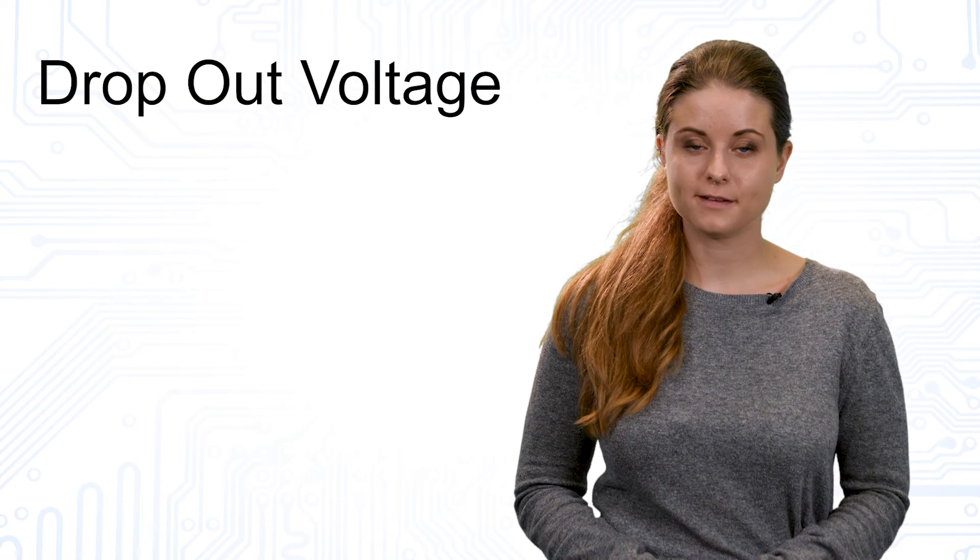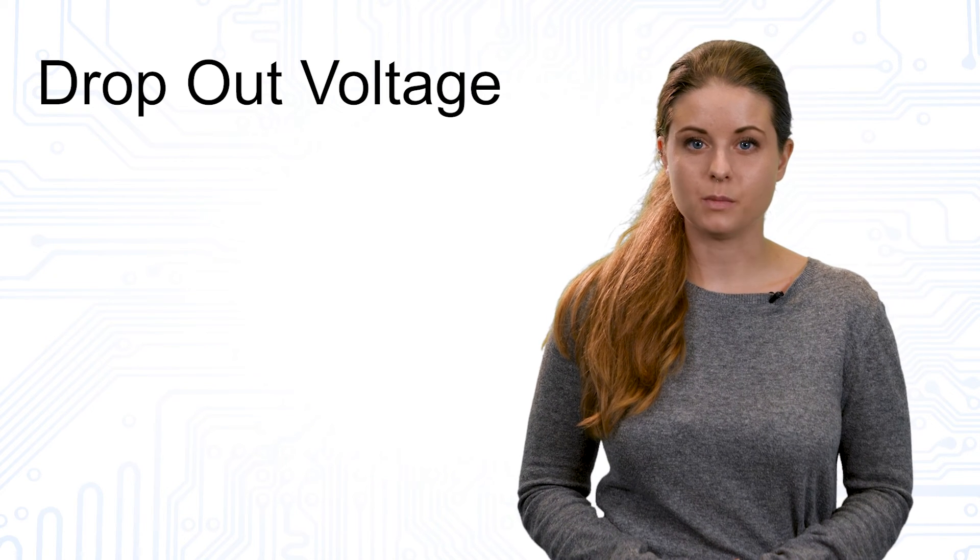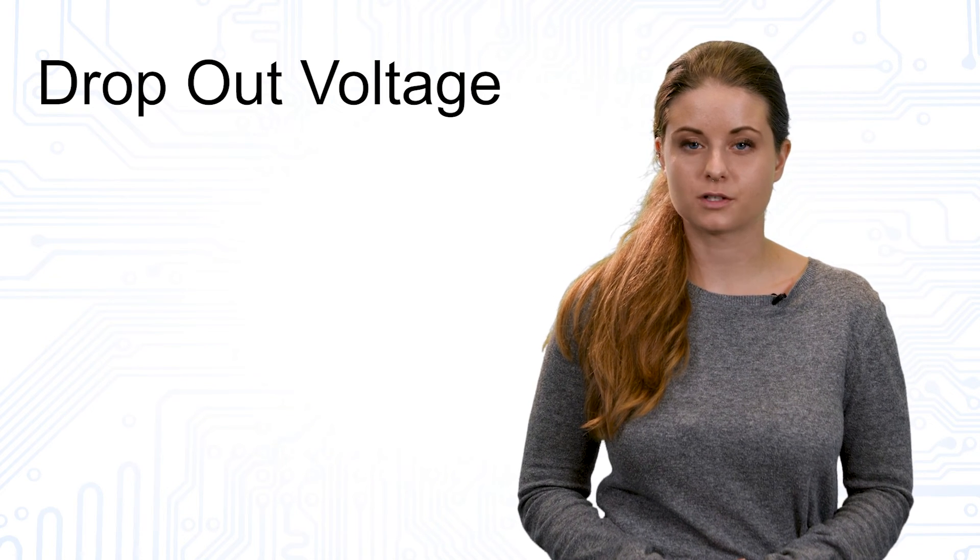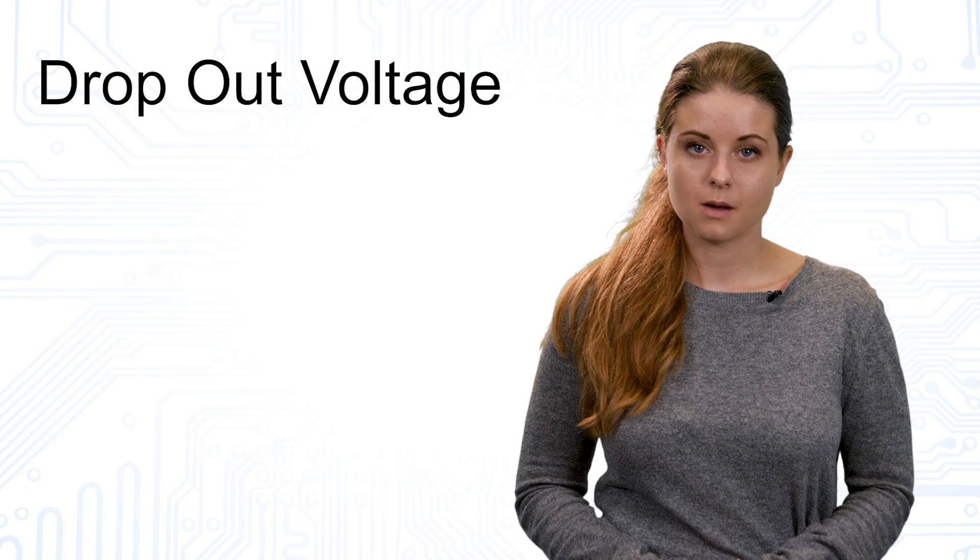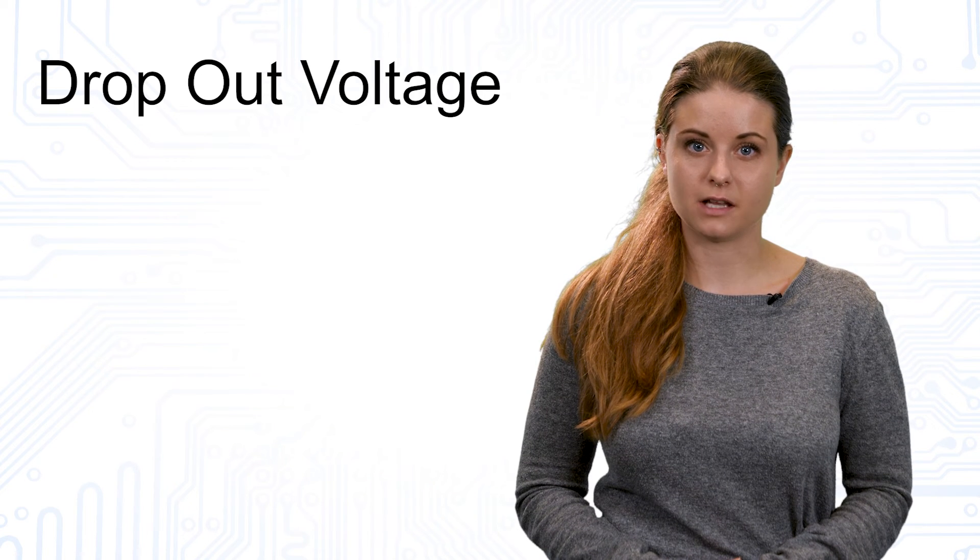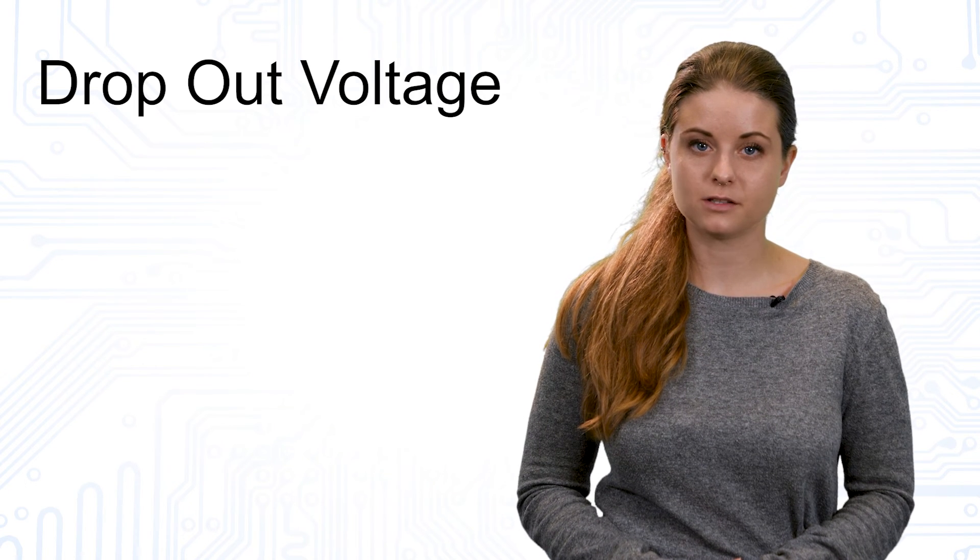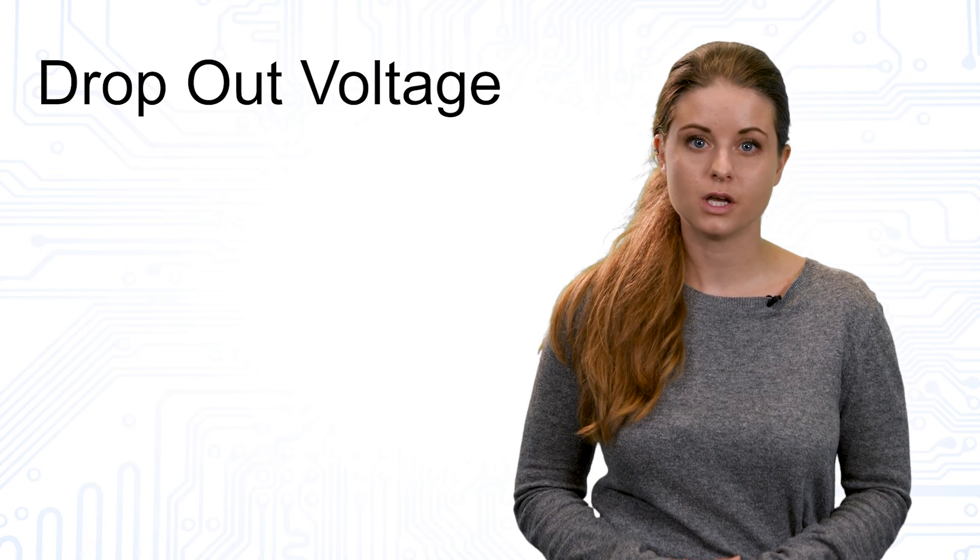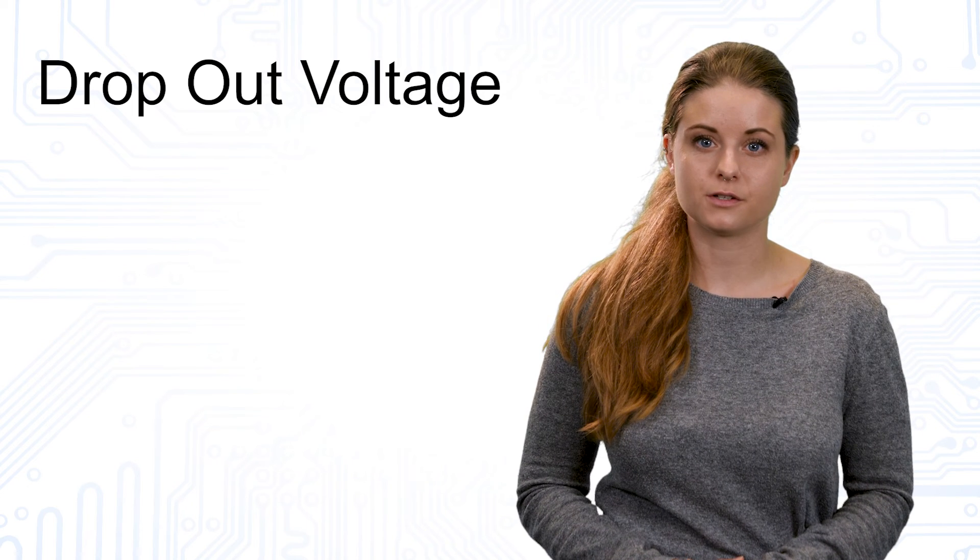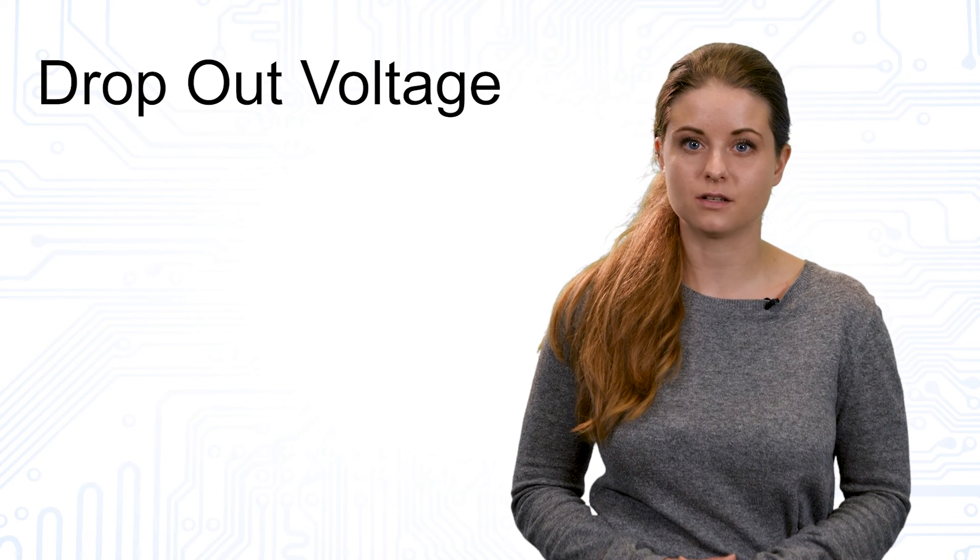Conventional linear voltage regulators feature a minimum dropout voltage of approximately 2V. But there are also devices available called low dropout regulators or LDOs, which can feature dropout voltages as low as some tens of millivolts.